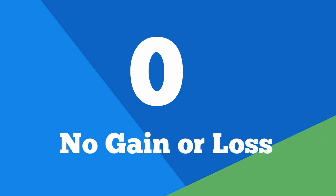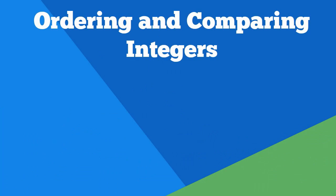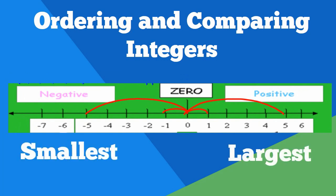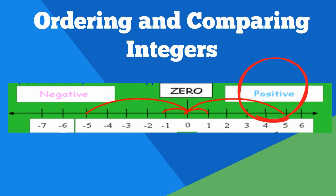Let's talk about ordering and comparing integers. You can use a number line when ordering and comparing integers. The number furthest to the left is the least number and the number furthest to the right is the greatest number. As you move to the right, the integers are positive. As you move to the left from zero, the integers become negative.